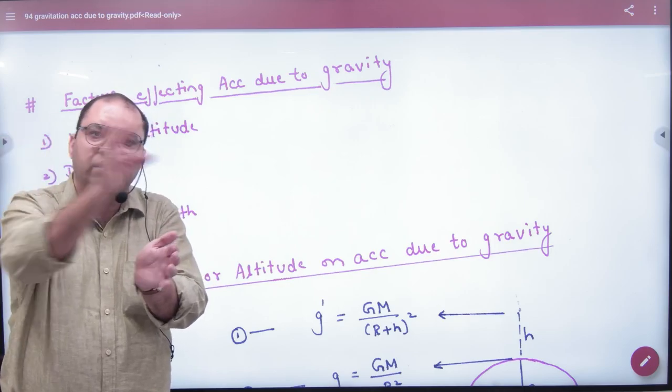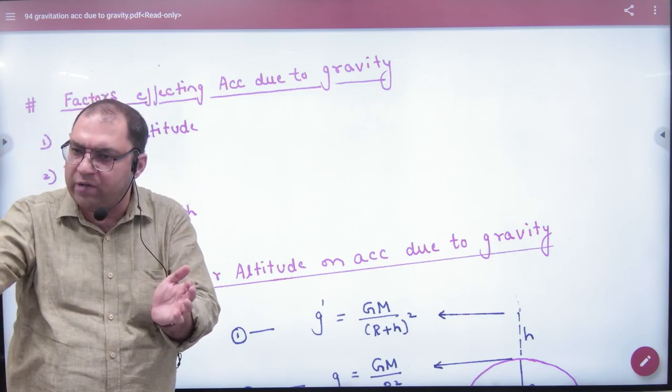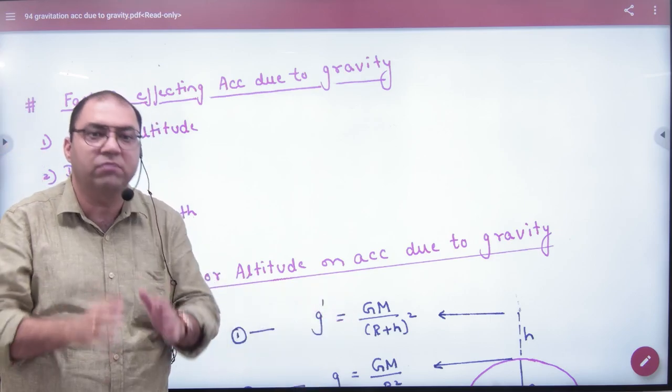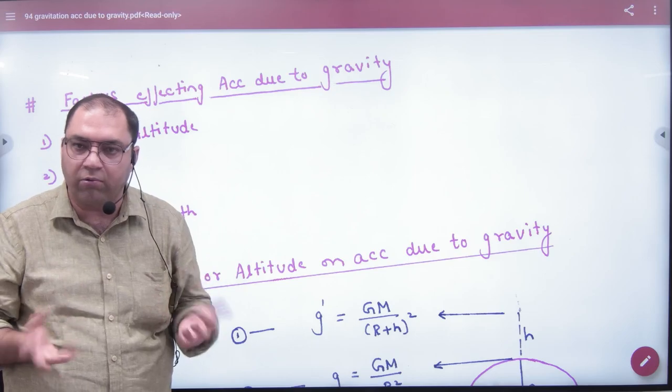Latitude means different locations of Earth. If you stand in the equator, if you stand in the poles, if you stand in America, if you stand in India, then your small g value will change.